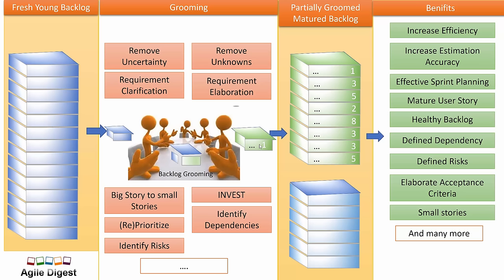We already define our dependencies during grooming. We know for each story what the dependencies are and who we need to talk to — that person, that team, or any other member — to clarify them. We also identify risk in the grooming session, which makes it much easier to mitigate those risks earlier. Based on that, you can do sprint planning knowing the risks and deciding whether to resolve them or move the story to the next sprint.